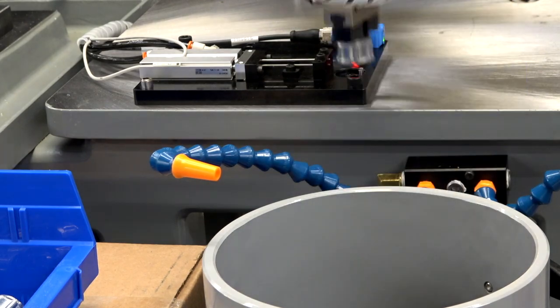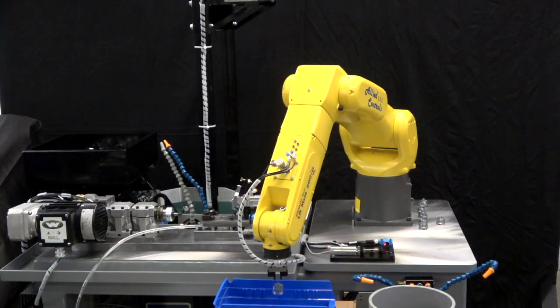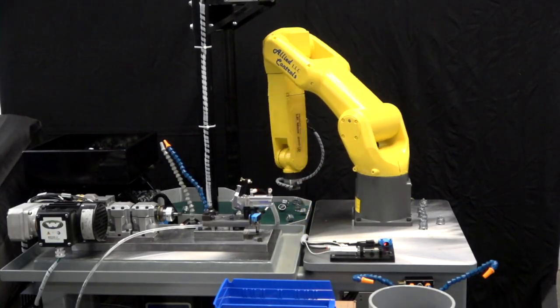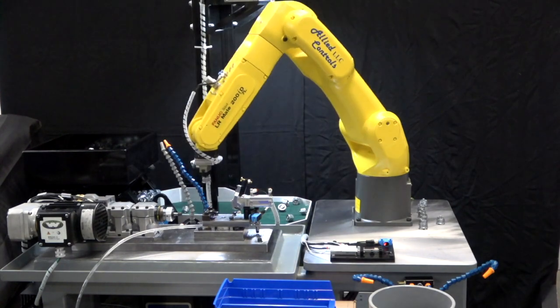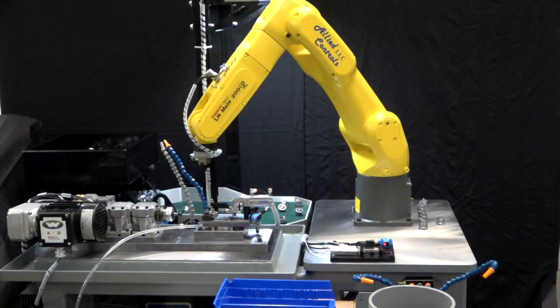Parts are blown off and then checked to confirm that the holes have been drilled. Once the parts have been checked, it will be placed into the customer's assembly machine, which will be integrated at Husky's facility.